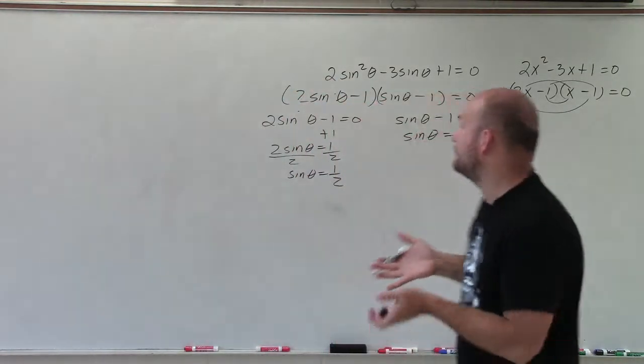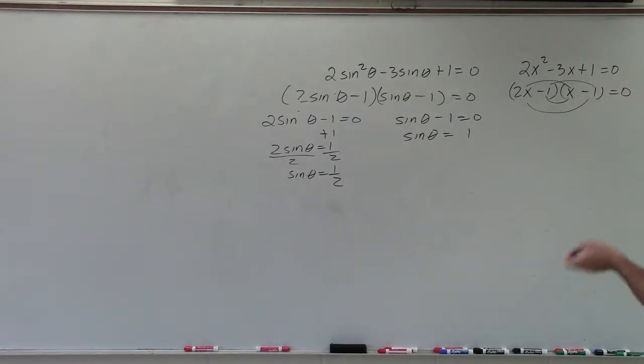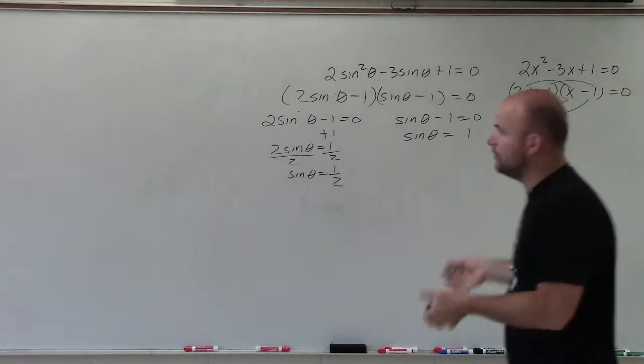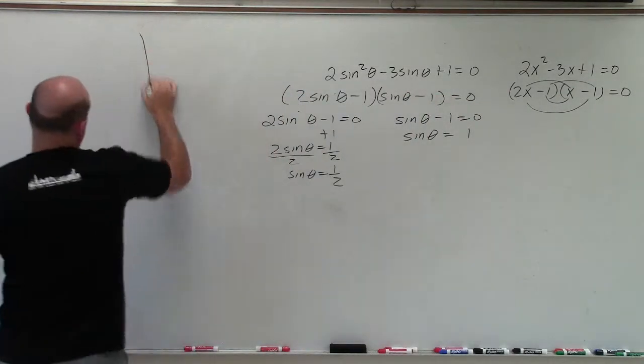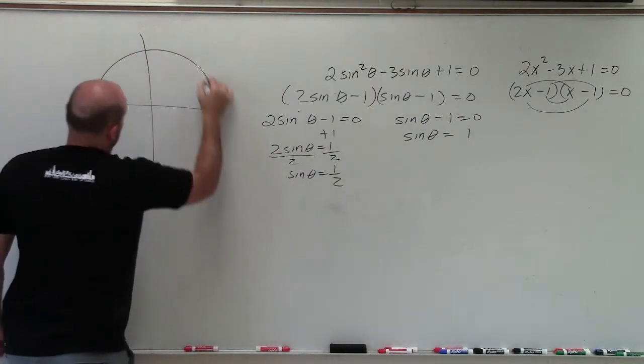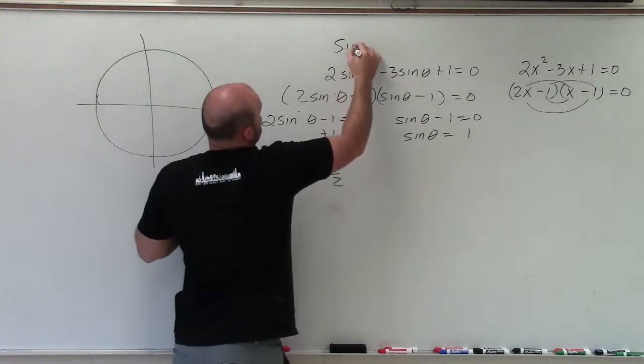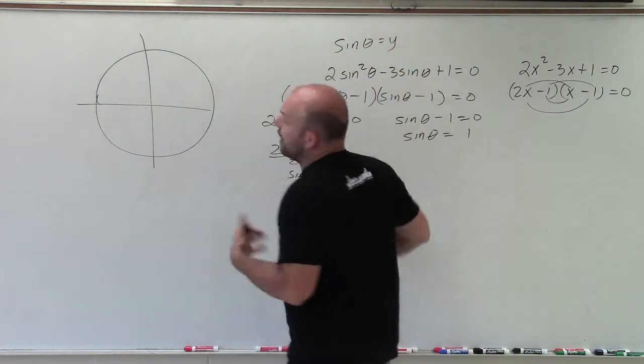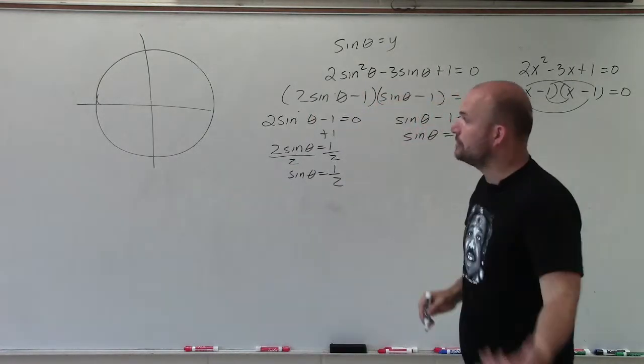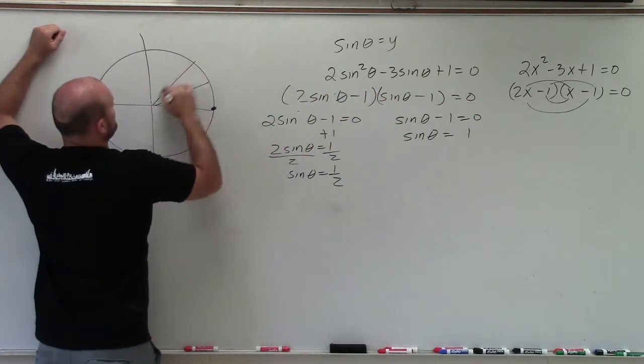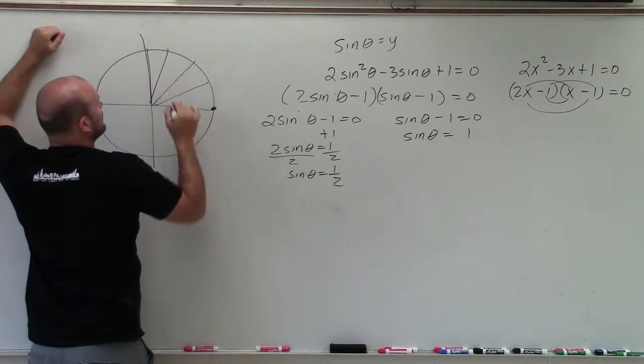So now I need to find the solutions for when is the sine of an angle equal to 1 half, and when is the sine of an angle equal to 1. So I go back to my unit circle, and again, remember the sine of any angle is equal to the y-coordinate of the point on the unit circle. So let's just kind of look at our first five points.